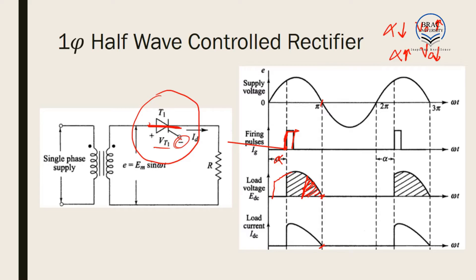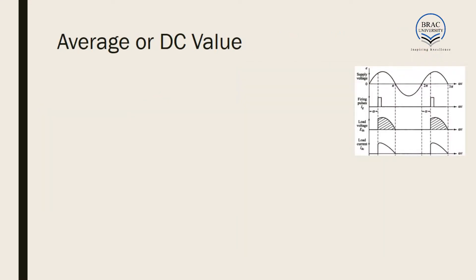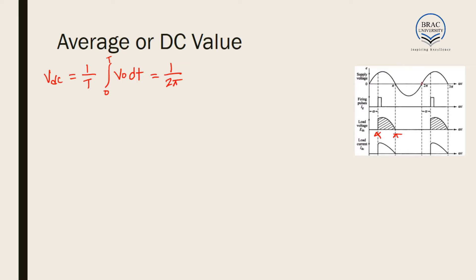We will now learn about the derivations of average voltage and RMS voltage. When measuring the average or DC value, the output switches on when the angle is alpha (which is variable) and switches off when the angle is pi or 180 degrees. The formula for VDC or average voltage is 1 over T times the integral from 0 to T of V output dt. Since the time period is 2π, we integrate from 0 to 2π, with the output starting at alpha and ending at pi.